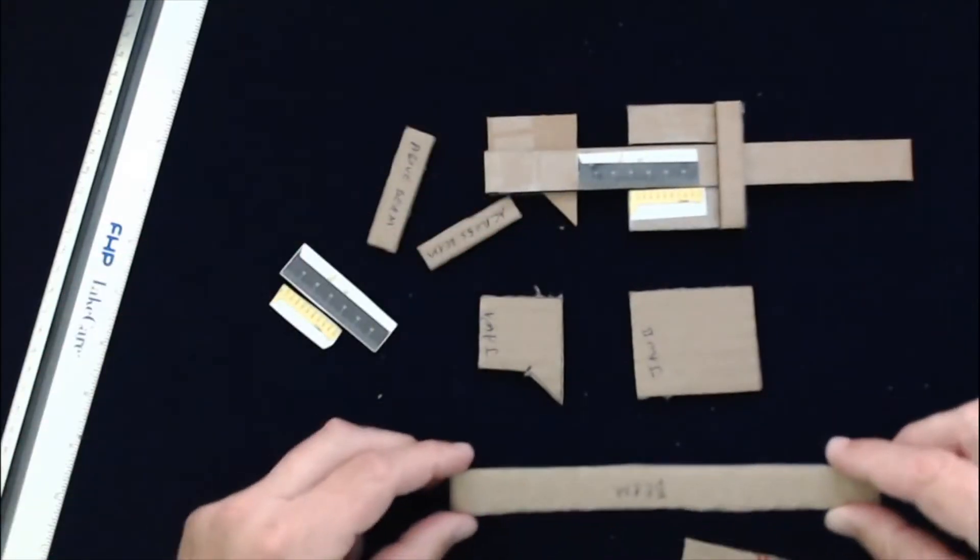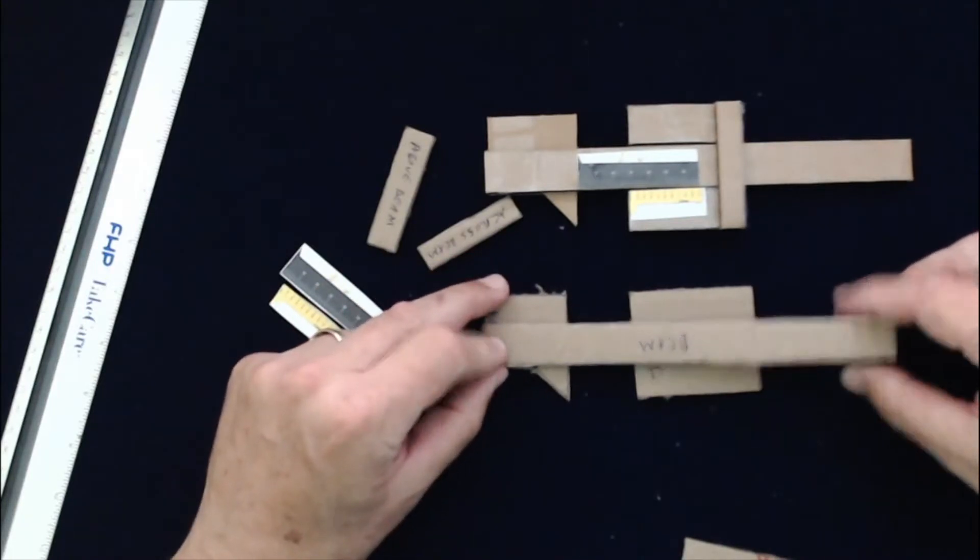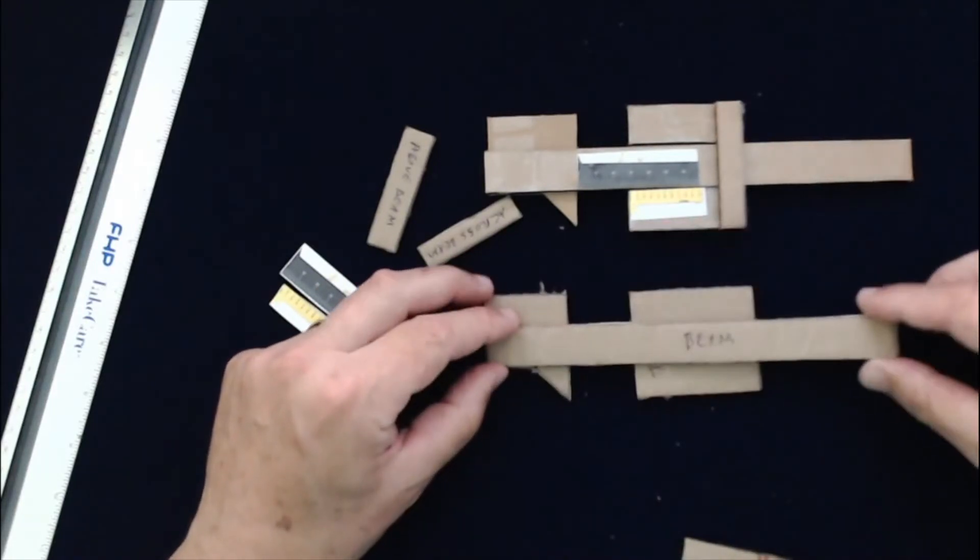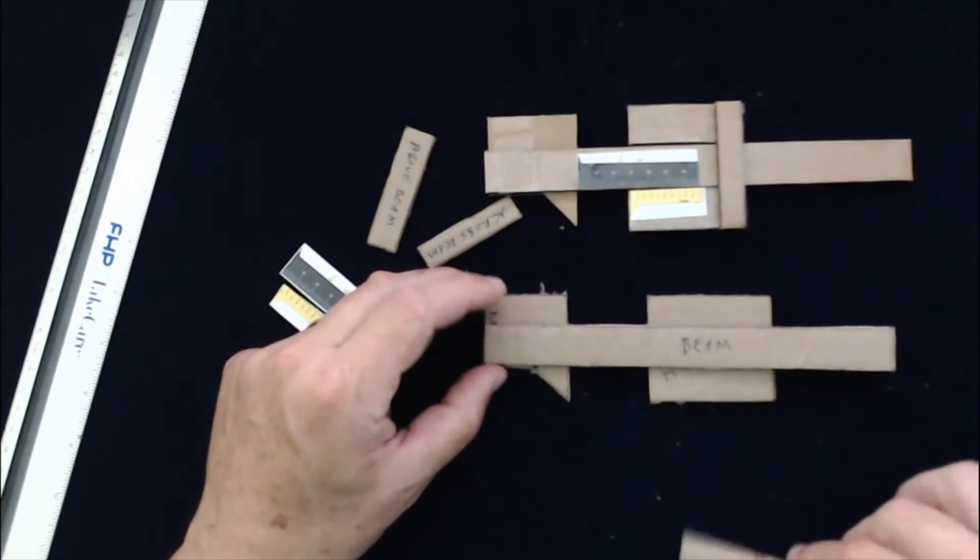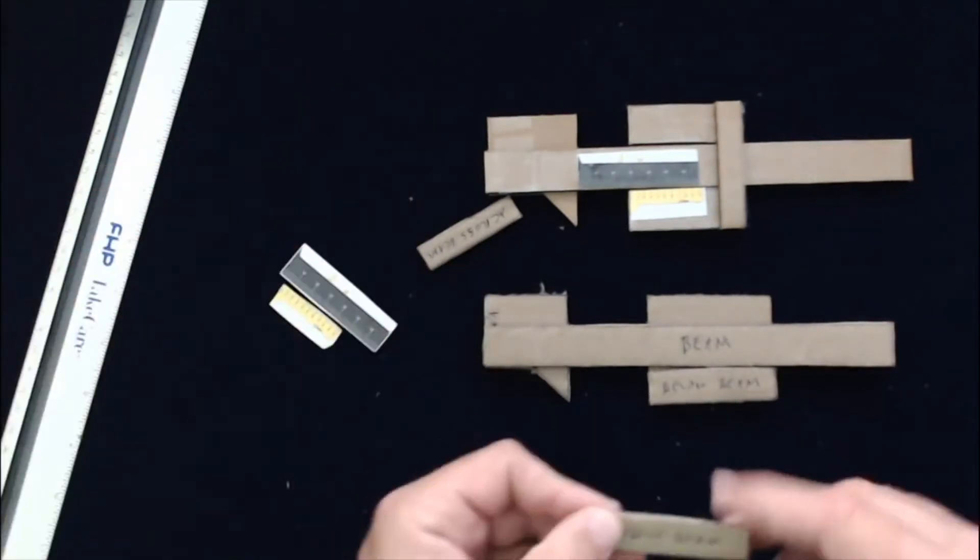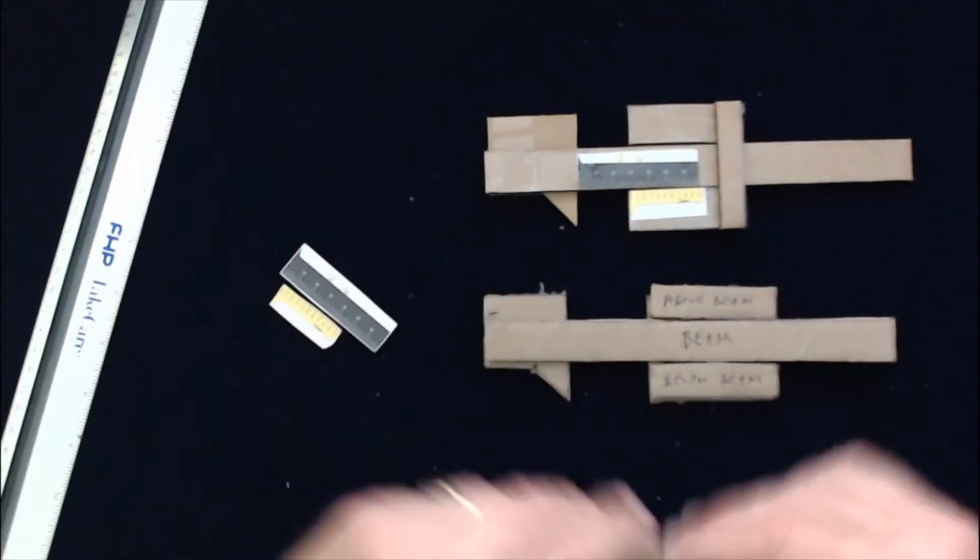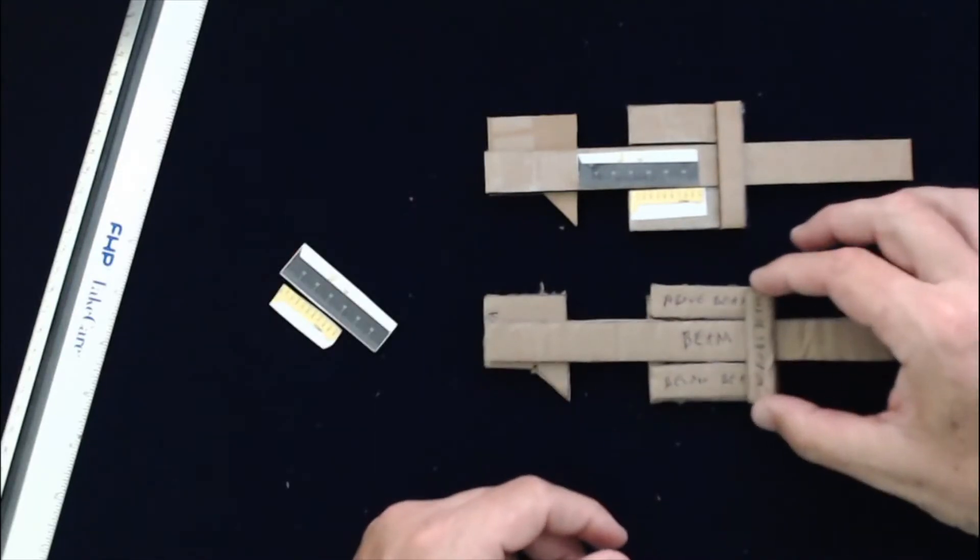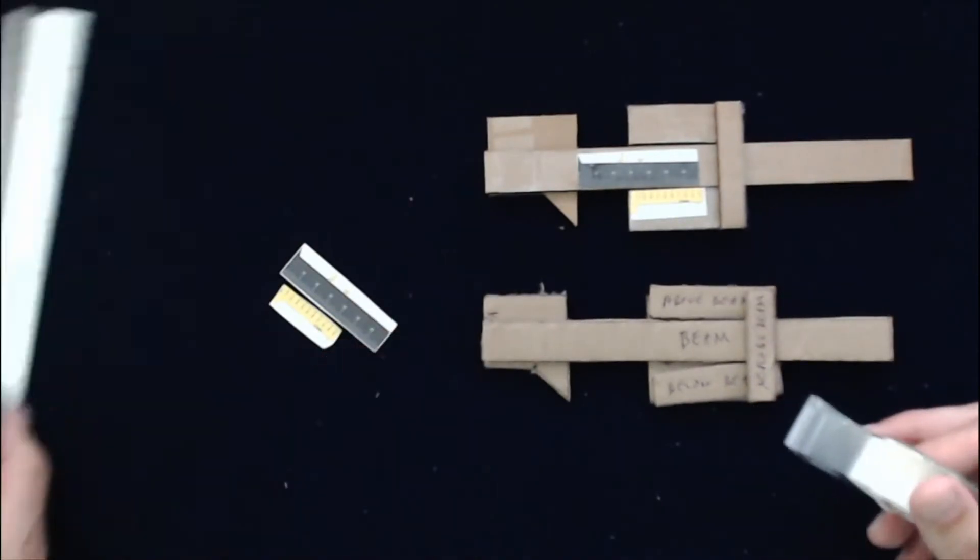This is the main beam. The main beam is going to go here like this. I'll turn it this way so you can see it spelled. And this is below the beam. This is above the beam. So this is the beam. This is above. This is below. And this is across. See how that goes.